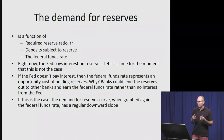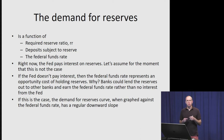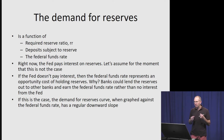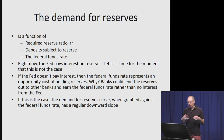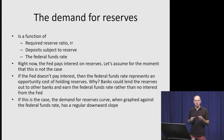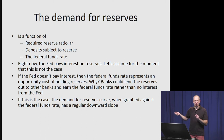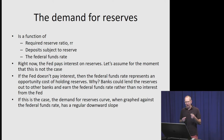The demand for reserves is a function of three things: the required reserve ratio (set by the Fed at 10% on demand deposits), the deposits subject to reserves, and the federal funds rate. Assuming the Fed does not pay interest on reserves, the federal funds rate represents an opportunity cost of holding reserves. If banks hold a dollar of reserves with the Fed, they earn no interest, and vault cash pays no interest either. So if that opportunity cost rises, banks will hold fewer reserves, giving the demand curve a standard downward slope.